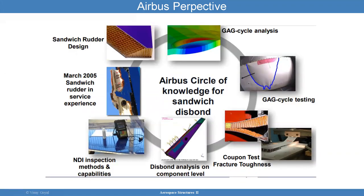We call this the Airbus circle of knowledge for sandwich structures. You have the sandwich rudder design, aircraft that have failed like in 2005, and the non-destructive evaluation methods that must be incorporated to find disbonds before they become catastrophic. You want to do analysis at the component level and testing at the coupon level to characterize the bond lines. Then you apply this data to a ground-to-air cycle test and develop analysis that can match the test — because that can be very useful in the design process.